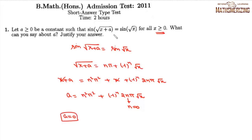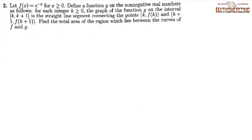Question 2: Let f(x) = e^(−x) for x ≥ 0. Define a function g on the non-negative real numbers such that for each integer k ≥ 0, the graph of g on the interval [k, k+1] is a straight line segment connecting the points (k, f(k)) and (k+1, f(k+1)). Find the total area of the region between the curves f and g.